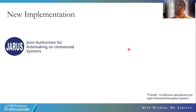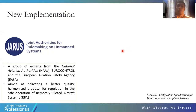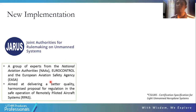For the novelty, this research tries to implement our drone into the Joint Authorities for Rulemaking on Unmanned Systems (JARUS) regulation. JARUS is a group of experts from national aviation authorities including EASA, which aims to deliver better quality harmonious proposals for regulation in the safe operation of Remotely Piloted Aircraft Systems (RPAS). This drone is the first in Malaysia attempting to implement the JARUS regulation.